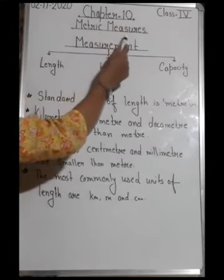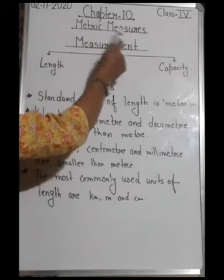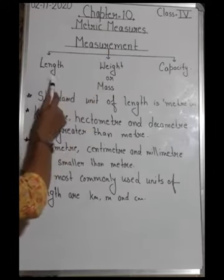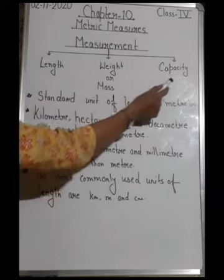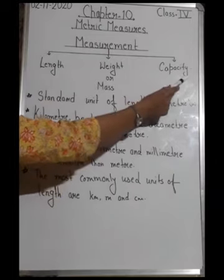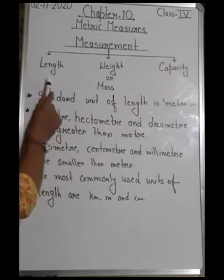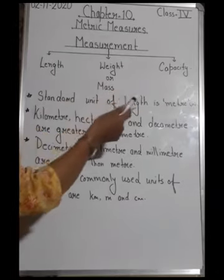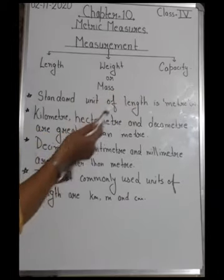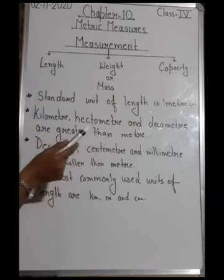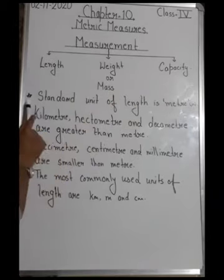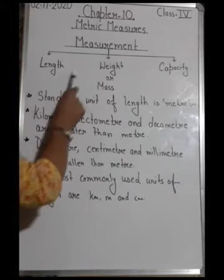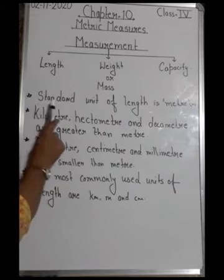So let's get started. Class 4, we are starting Chapter Number 10, that is Metric Measures. In this chapter we are going to learn measurement of length, weight or mass, and capacity. We will learn how to measure the length, weight, and capacity of an object.